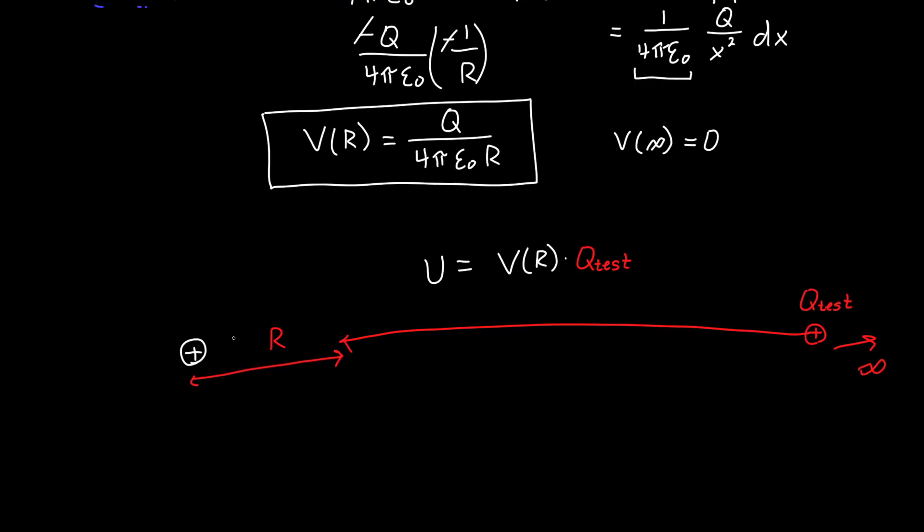So the closer I get to my point charge the more and more energy it costs me to bring this test charge closer and closer and this kind of makes sense because this point charge is giving off electric fields in this direction and the closer I get the bigger the electric field is the harder this point charge will push away on my test charge.